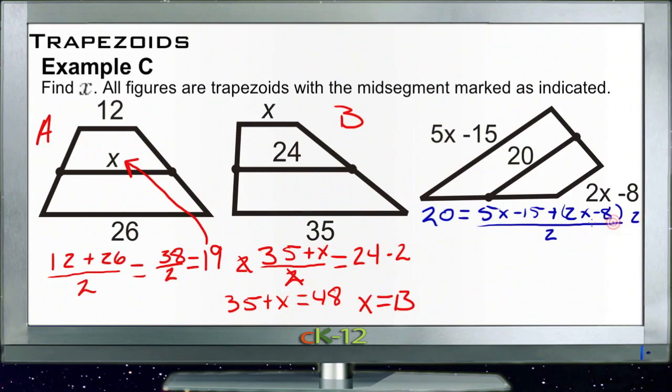So if we start by multiplying both sides by 2, these 2s will cancel and we'll get 40 is equal to... and then we can combine our like terms here: 5x and 2x is 7x, and negative 15 and negative 8 is negative 23. So now we have 40 equals 7x minus 23.